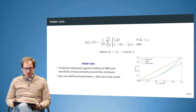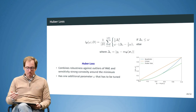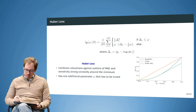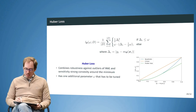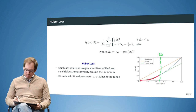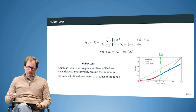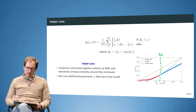Another option is the Huber loss, which is a mixture between the linear and the mean squared loss. Until some additional parameter omega, the loss is curved like MSE; beyond that point it becomes linear. This combines precision and the availability of a gradient close to the solution, while also providing robustness with respect to outliers.